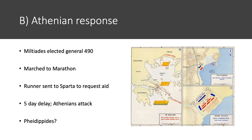Miltiades knew he was essentially alone. The core of the army were hoplites, along with a small contingent from the city-state of Plataea. There was a five-day delay — Herodotus says it was because Miltiades was waiting for his day to lead as general. The Persians had landed at the Bay of Marathon, one of the few places along the Greek coastline that could actually accommodate a fleet of 30,000 ships — chosen likely on the advice of Hippias. Even though the Persians outnumbered the Athenians by at least 10 to 1, the marshy terrain on both flanks of the plain prevented them from taking full advantage of their numerical superiority.